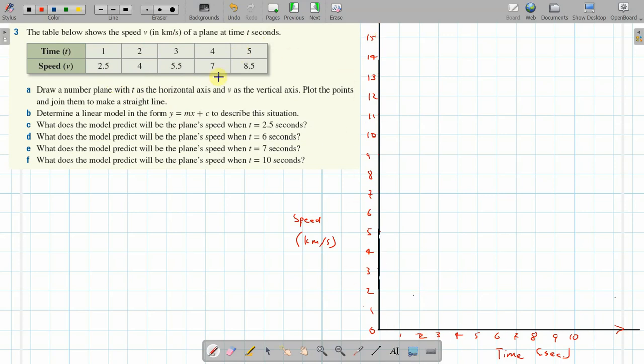Draw a number plane with t as the horizontal and v as the vertical. So t and v, where t is time and v is speed or velocity. Determine a linear model in the form y equals mx plus c to describe this situation. Let's draw the number plane first and plot the points.